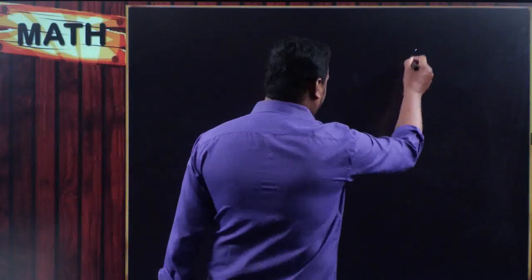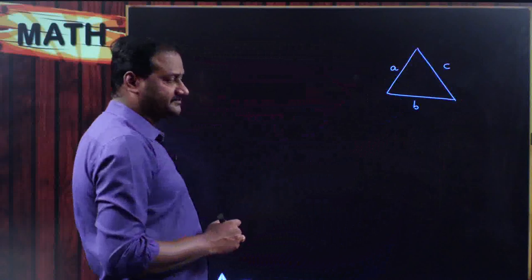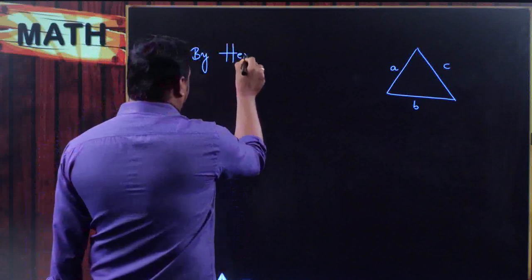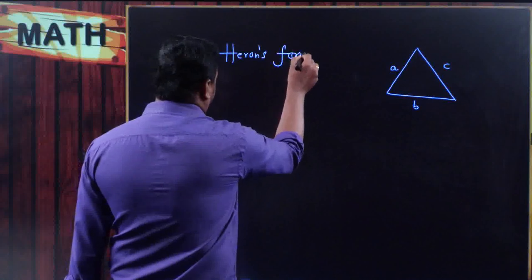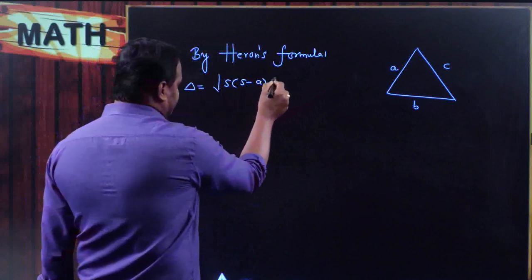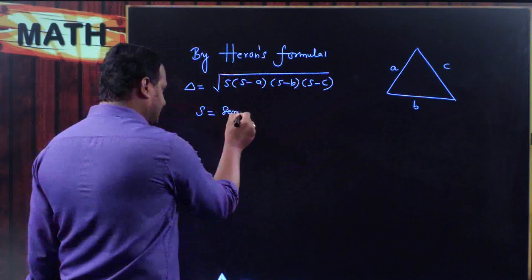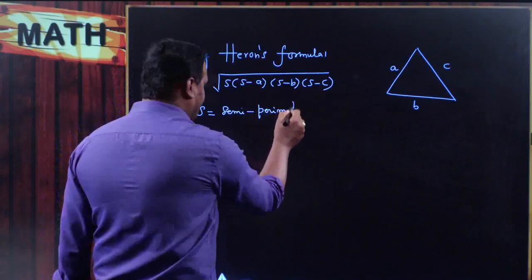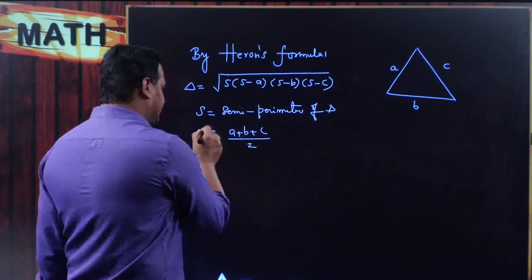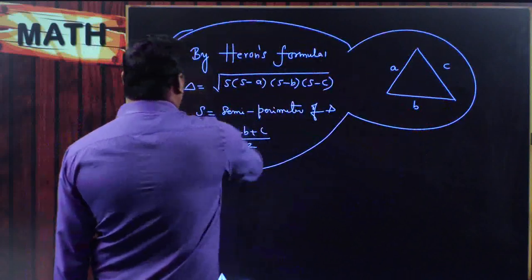First of all, when all the three sides are given — for example, this is small a, this is small b, and this is small c — then area of triangle with sides a, b, c is by using Heron's formula: area of triangle is equal to square root of s into s minus a times s minus b times s minus c. Where s is the semi-perimeter of the triangle, that is a plus b plus c divided by 2.